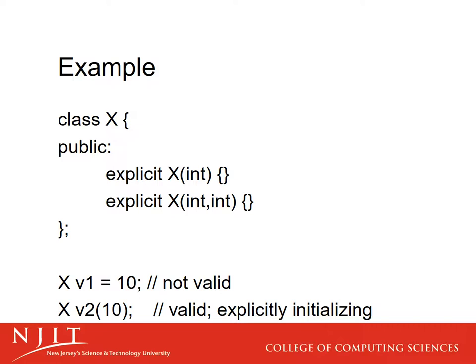With an explicit constructor, a line like 'xv1 = 10' is not valid if the constructor is explicit, because the compiler won't automatically convert the integer to an X. But 'X v2(10)' is valid because you're explicitly calling the constructor. Why do this? Maybe creating the object is expensive and you don't want automatic conversions. Maybe there are ambiguities with multiple types that could be created from an integer. Making things explicit keeps compilation clean and intentional.